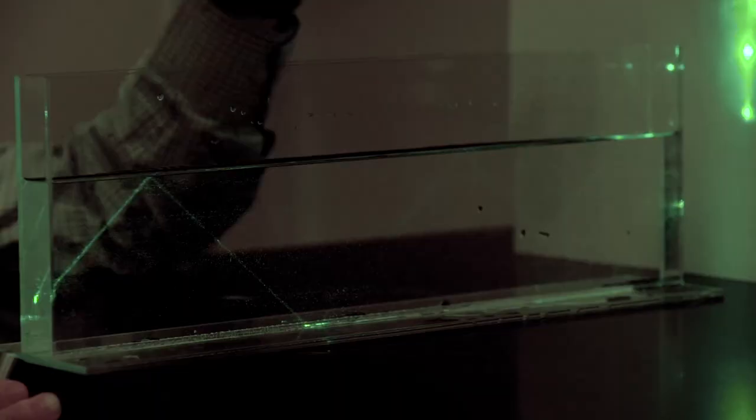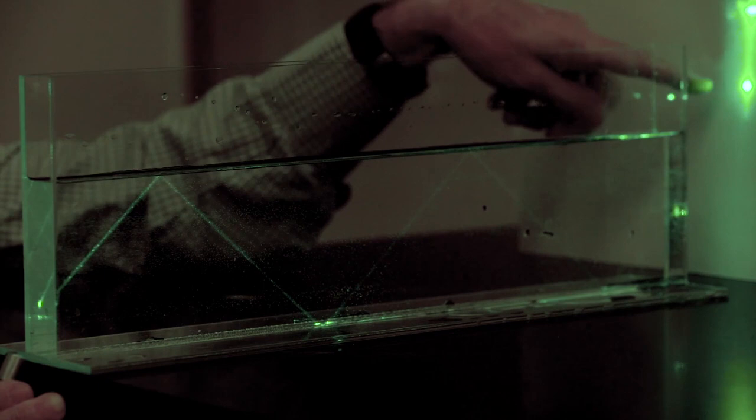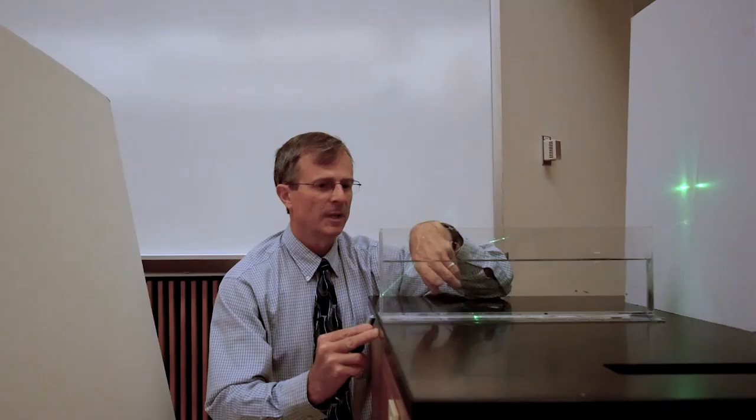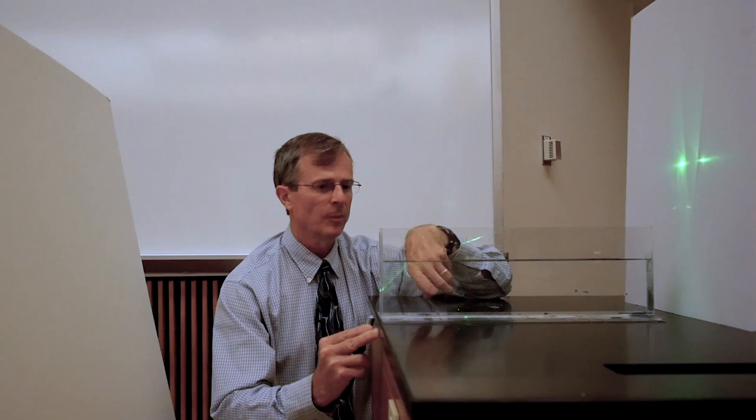There's still a reflected beam here and a refracted beam here. But the reflected beam is getting dimmer by the second. And as we move further and further away from the critical angle, that reflected beam becomes more and more difficult to see.